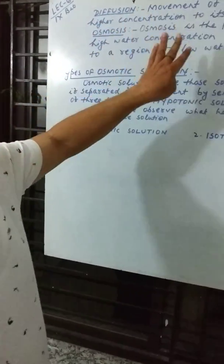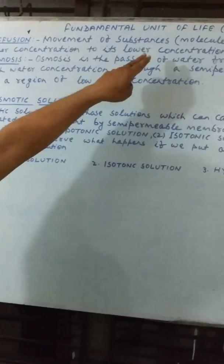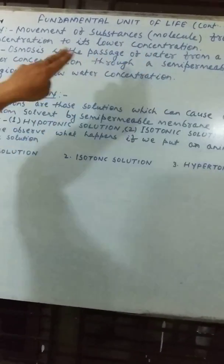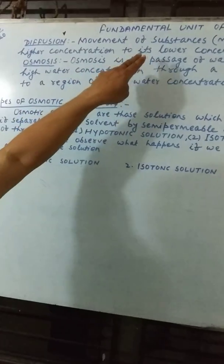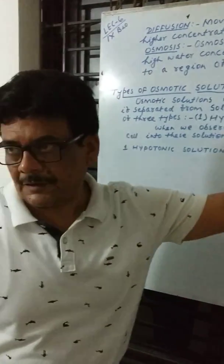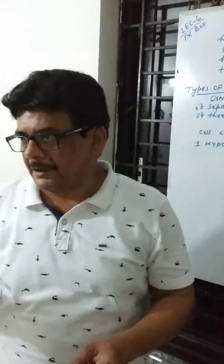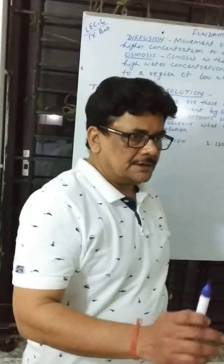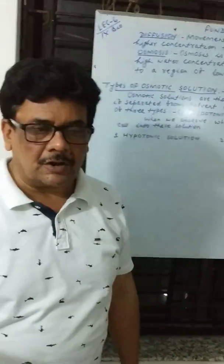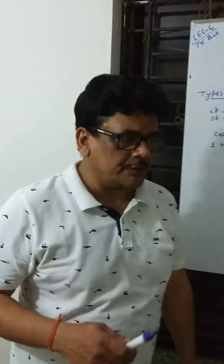Diffusion is the movement of substances or molecules from a higher concentration to a lower concentration. It is called diffusion. For example, when we take an incense stick and it is burned in a corner of a room, we can smell it from another corner.